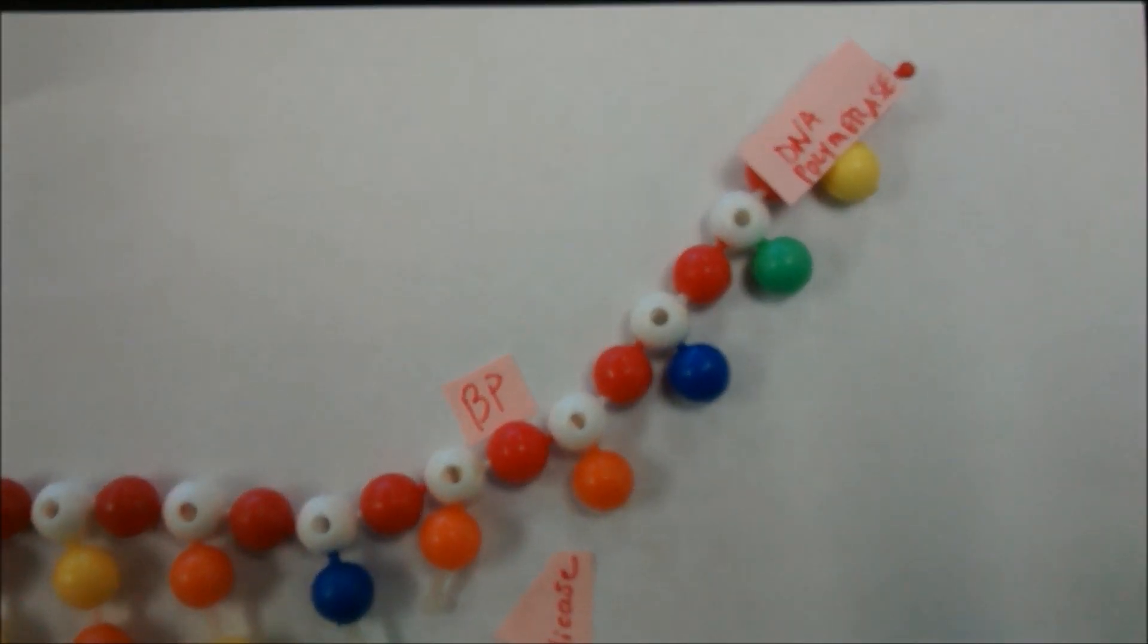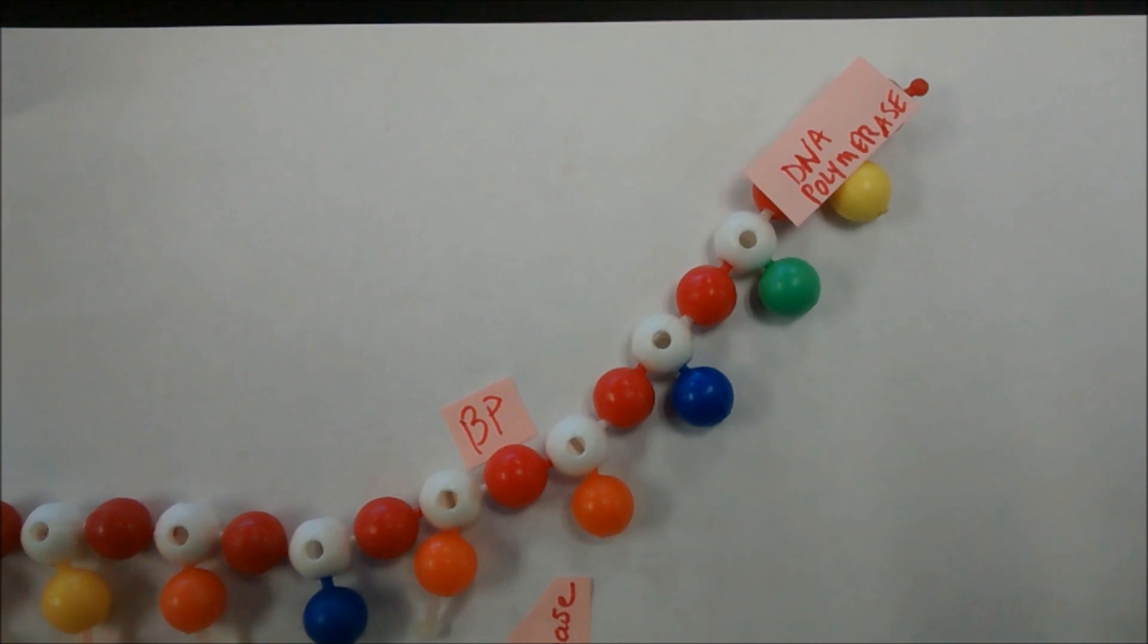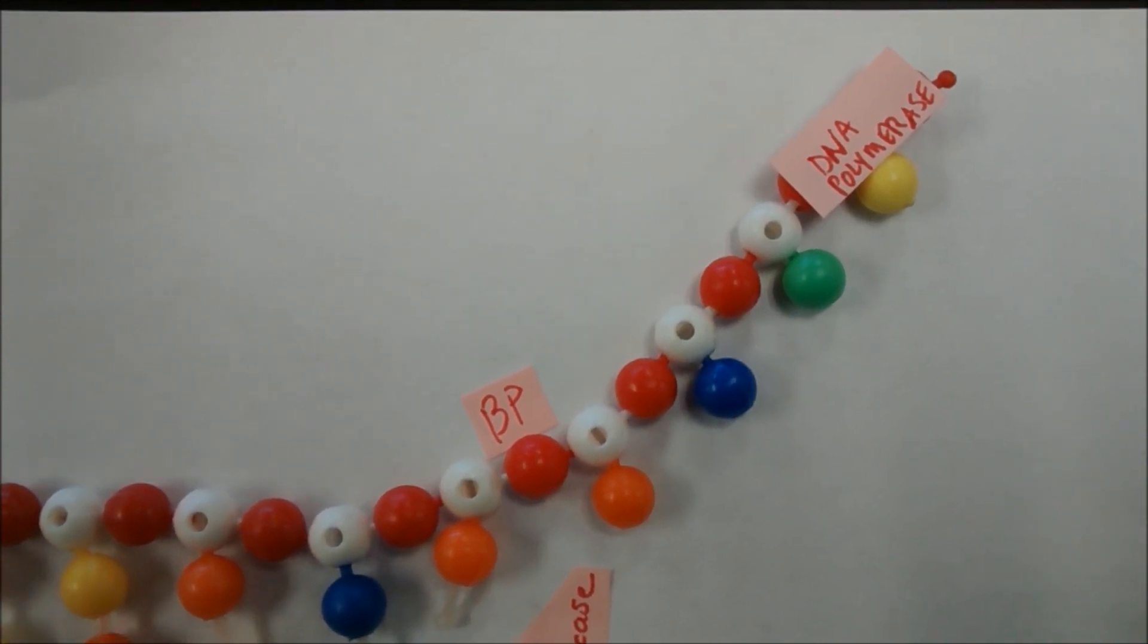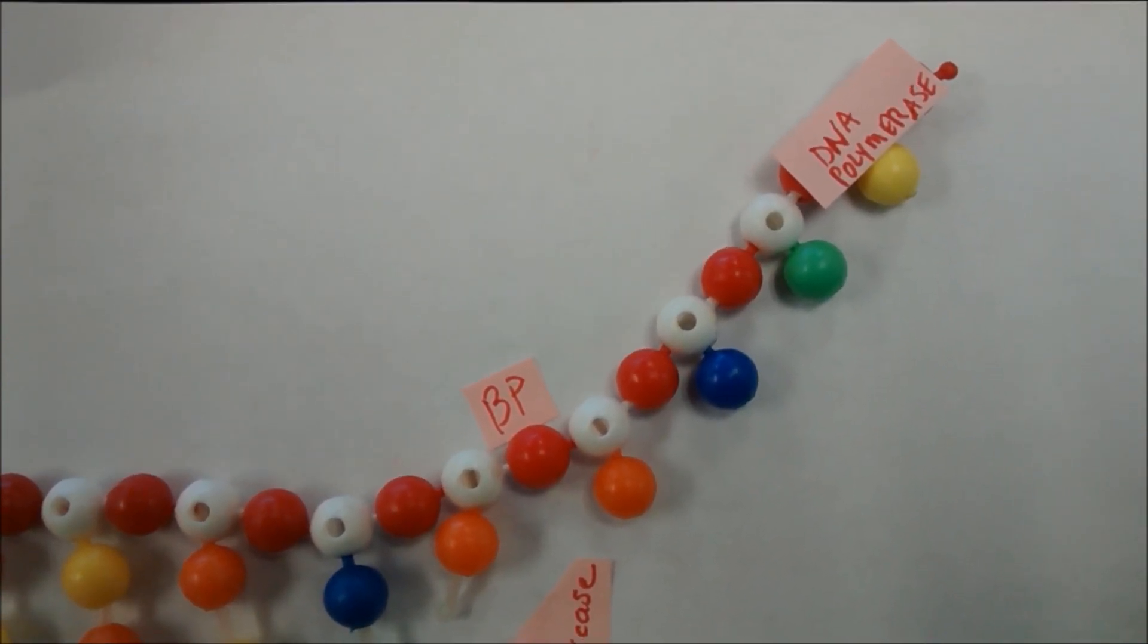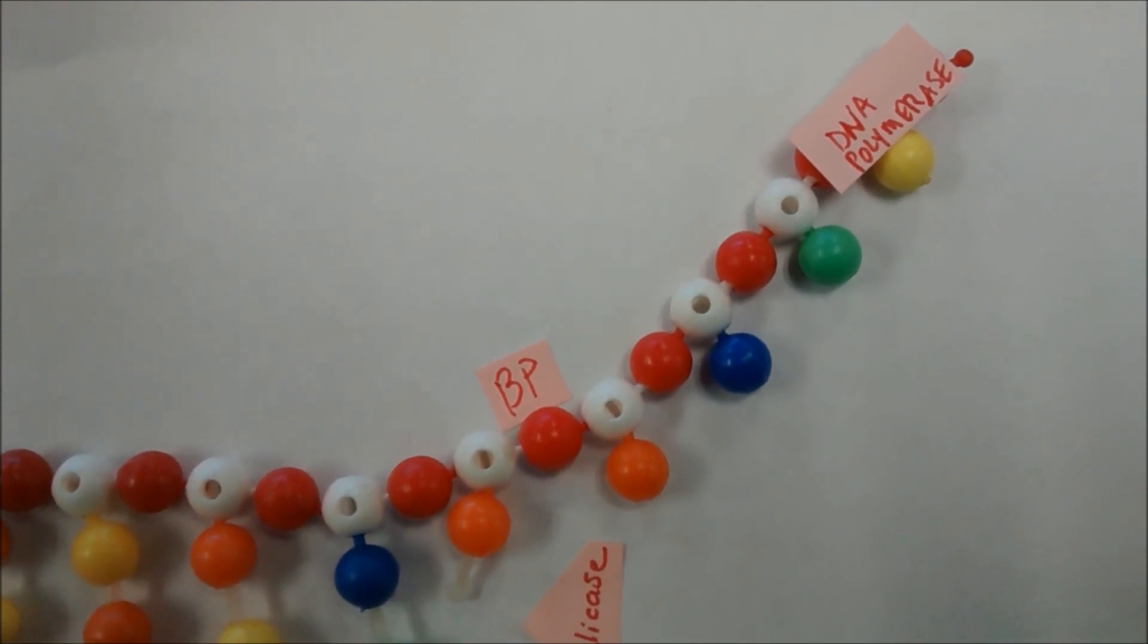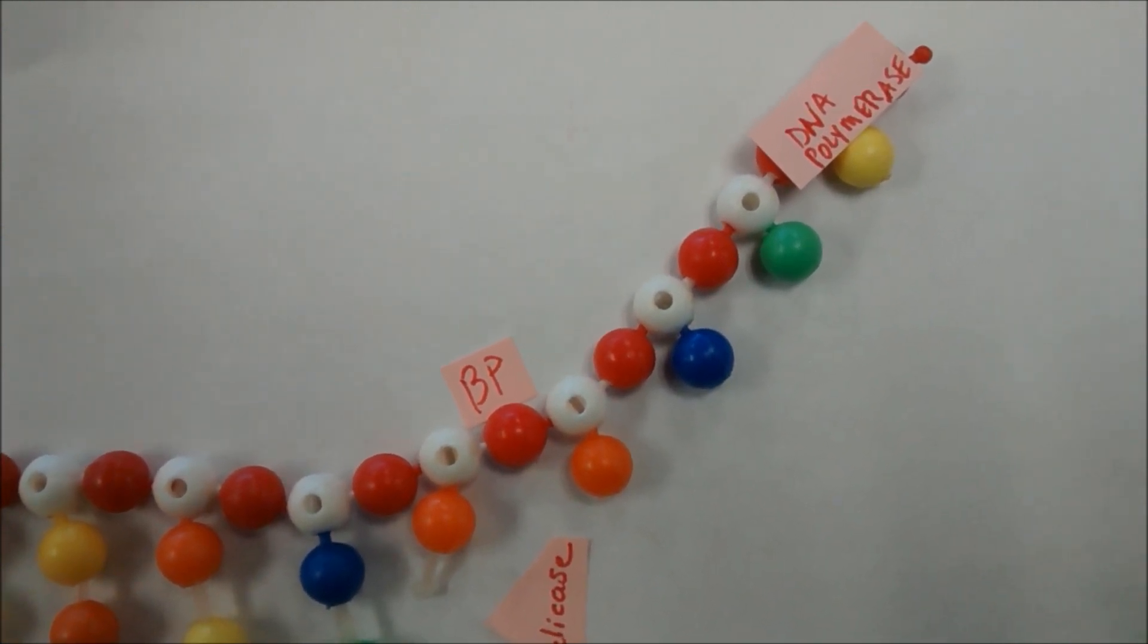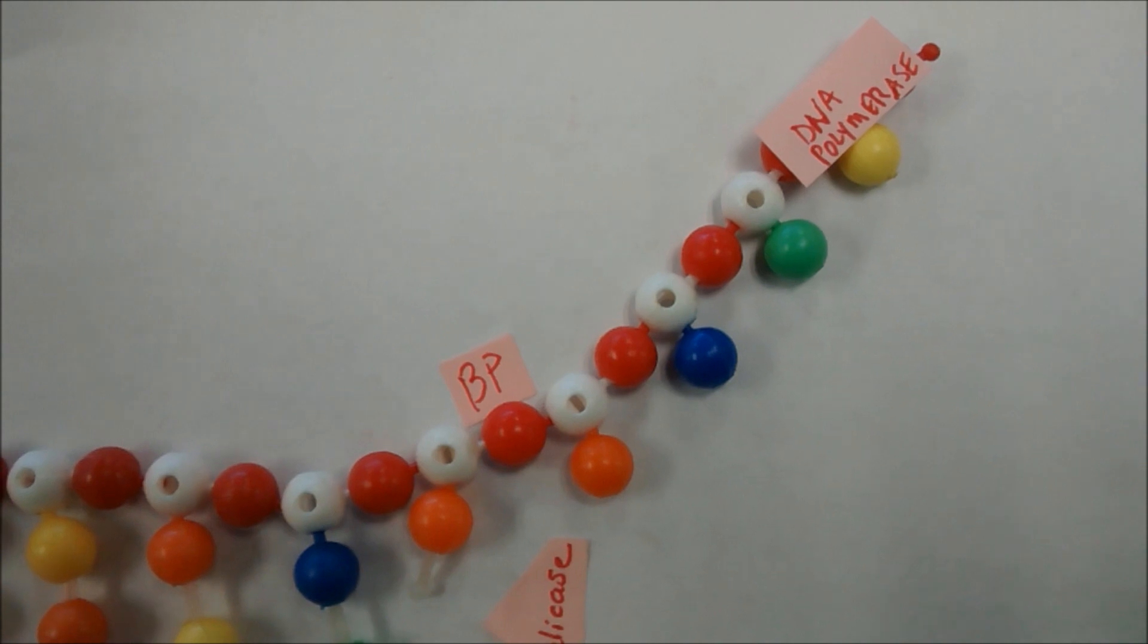So DNA polymerase is on board now. And it's going to slide down the three prime to five prime side reading the sequence on the parent strand and building the new strand five prime to three prime. So I'm going to go ahead and move DNA polymerase down and add the new strand.